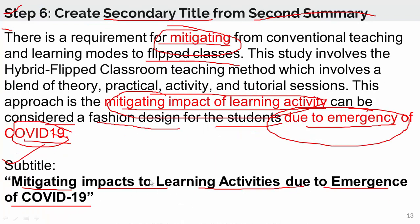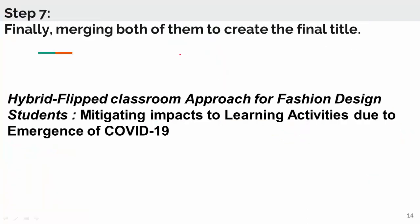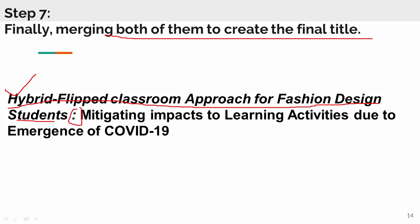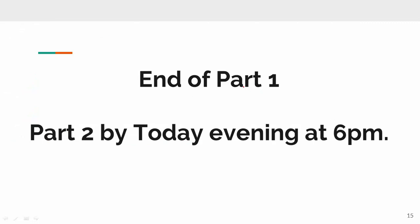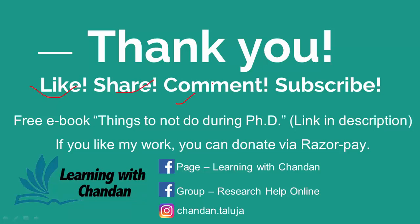Now, combining both the working title and the secondary title, we create our final title: 'Hybrid Flipped Classroom Approach for Fashion Design Students – Mitigating Impacts on Learning Activities Due to the Emergence of COVID-19.' Using this long-form method in these steps, we have created a final title for our research article. This brings us to the end of Part 1. Part 2 will be available by 6 PM today. If you have questions, please ask in the comments section, and don't forget to like, share, and subscribe to the channel Learning with Chandra. Thank you.